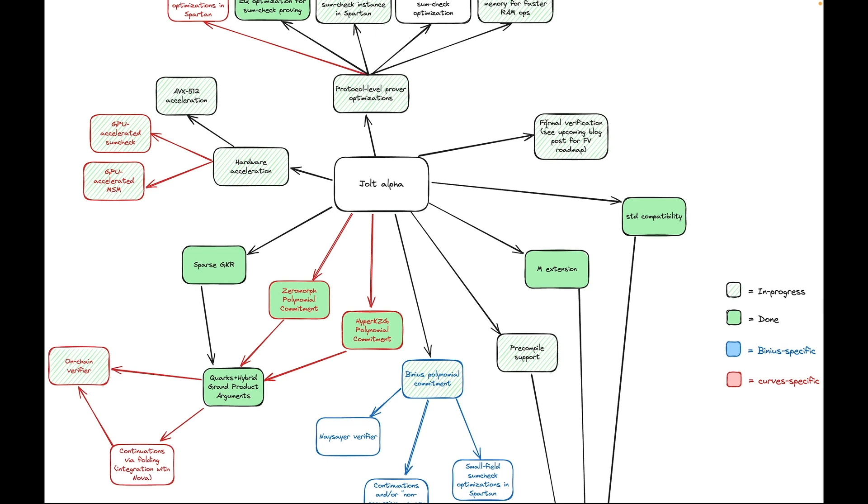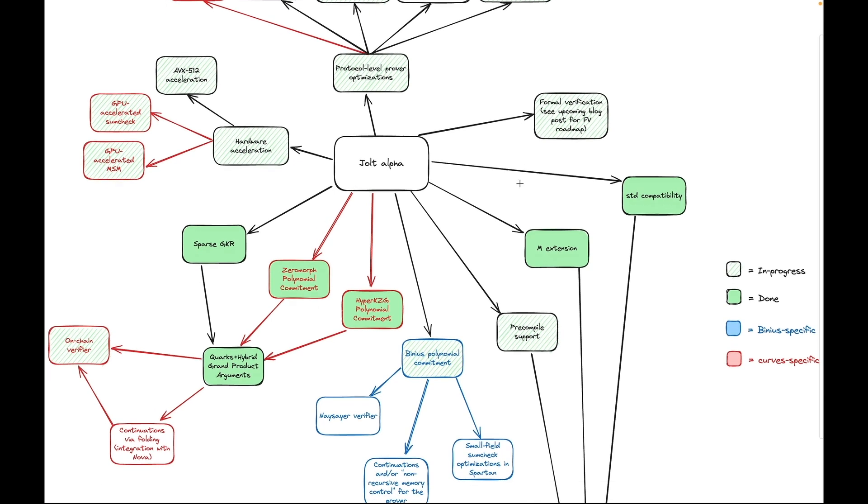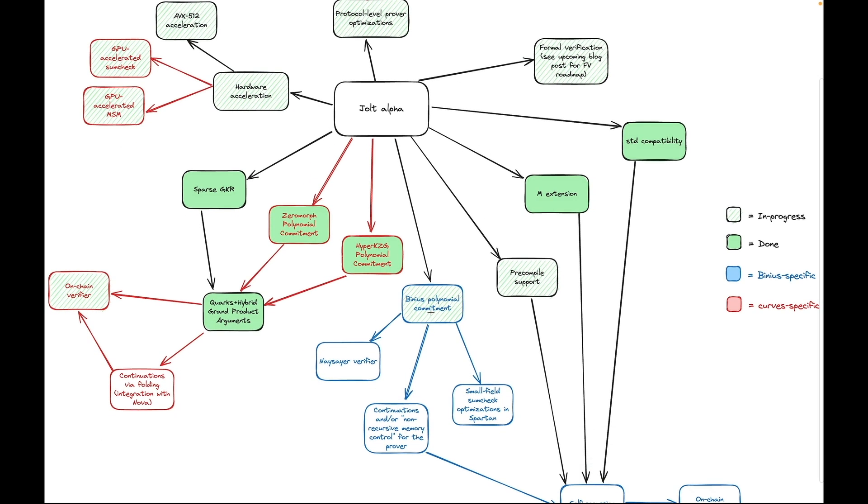And yeah, that is our plans for Jolt. In the coming months, the focus will be on folding and elliptic curves. In the long term, we will turn our focus to hashing-based commitment schemes and trying to get another order of magnitude speed up out of them.